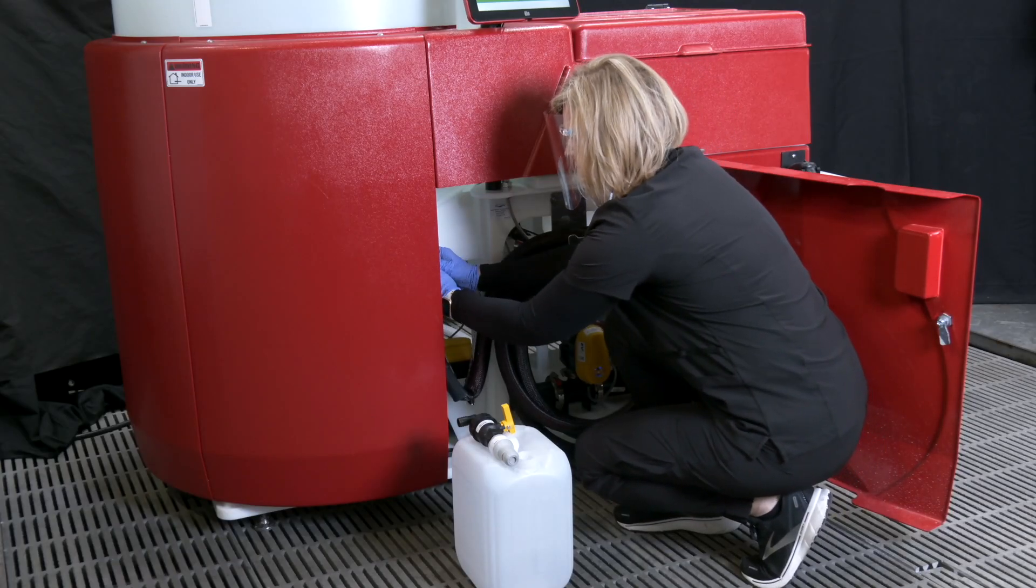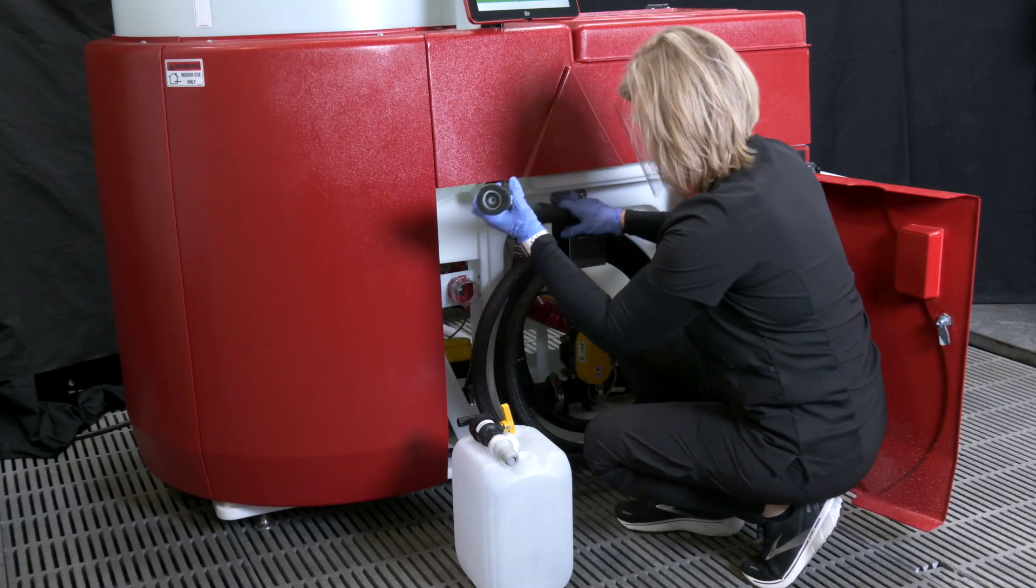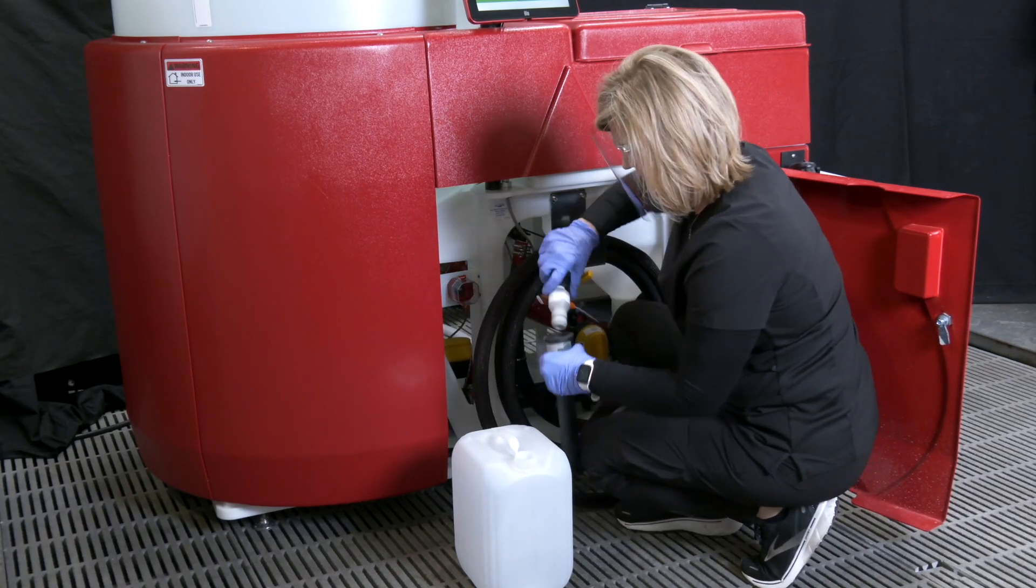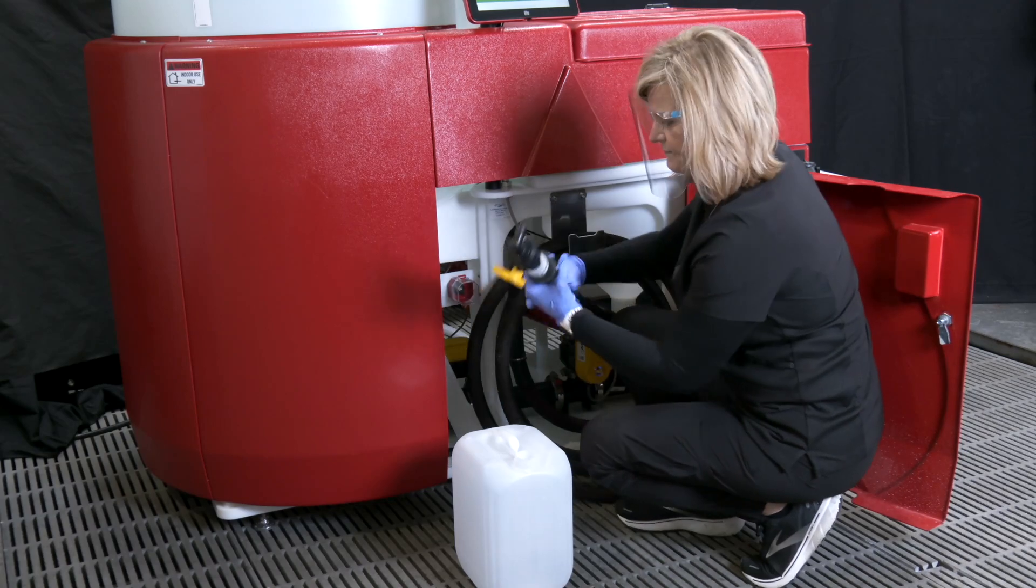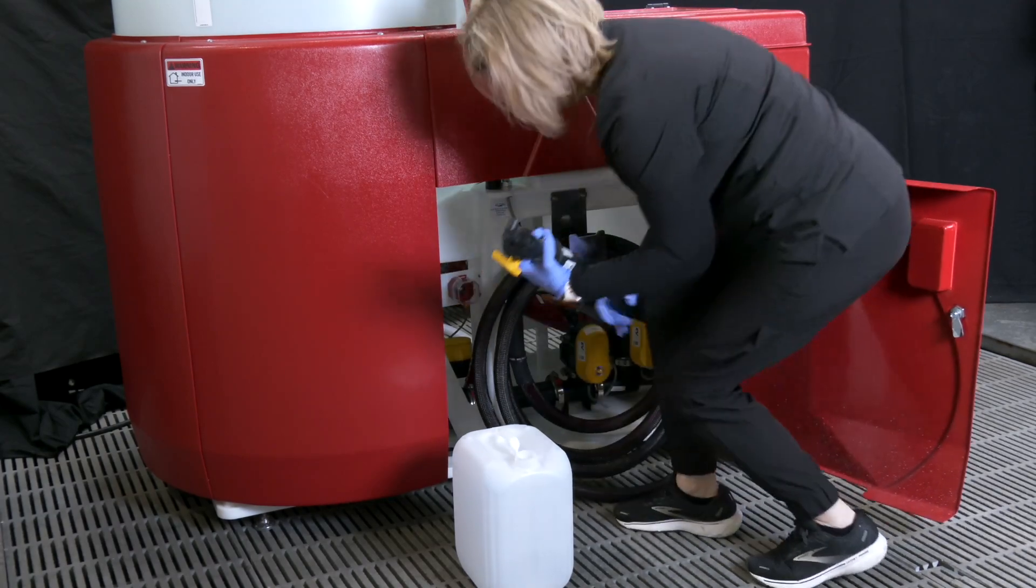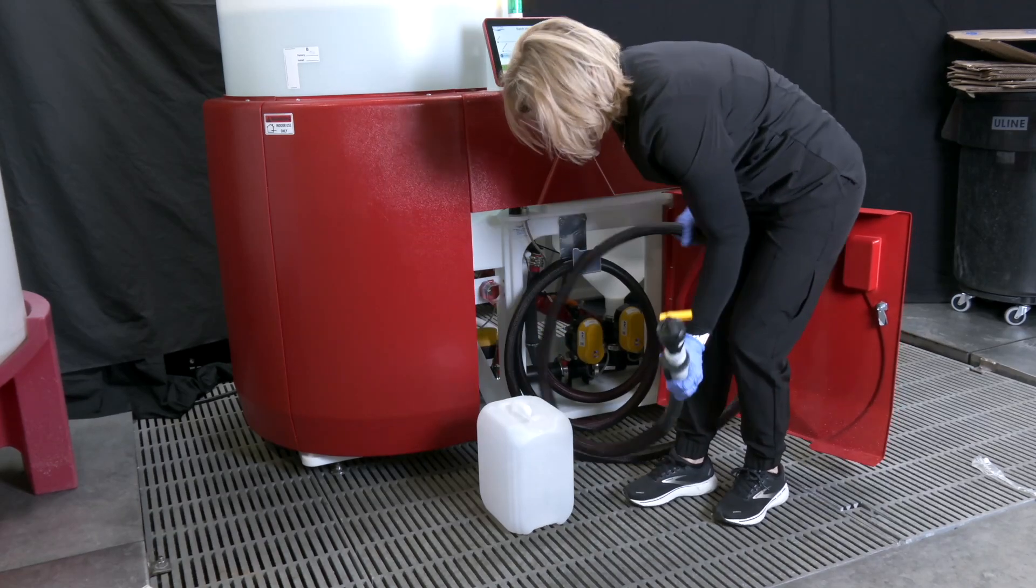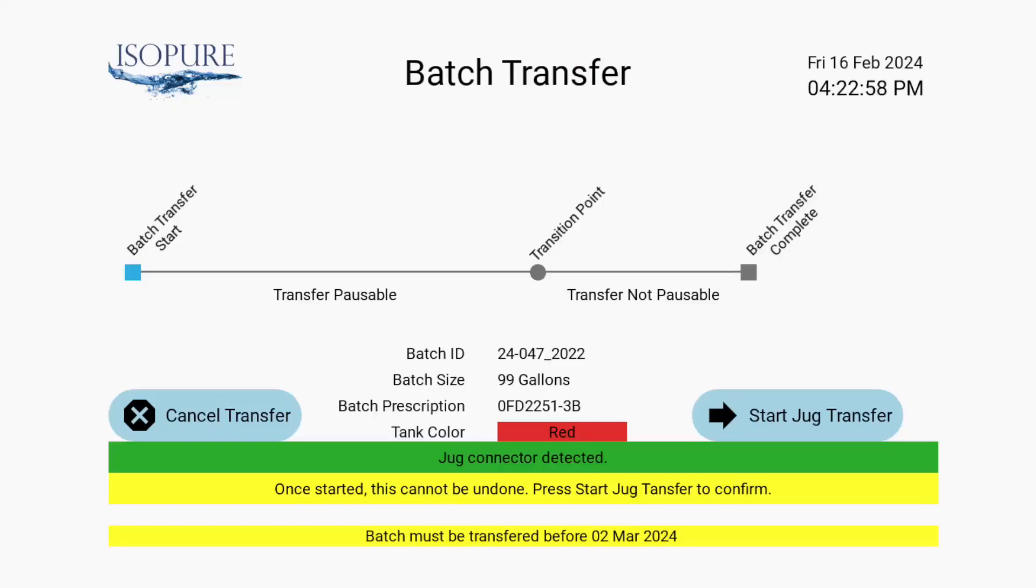Attach the transfer hose to the jug fill assembly and be sure that the jug you are about to fill is on a stable surface below the level of water in the tank. Acumix does not actively pump acid during a jug fill, relying instead on gravity to empty the tank.